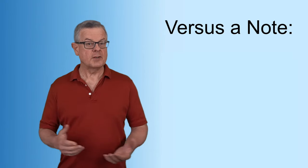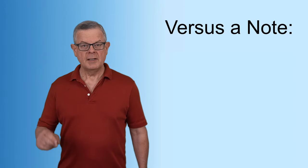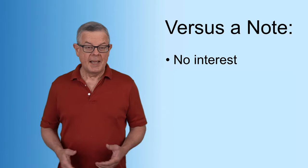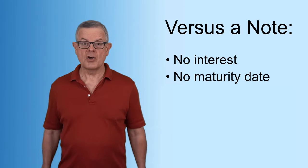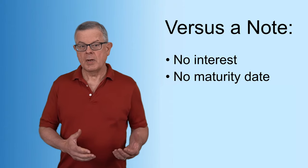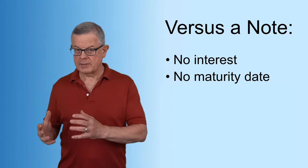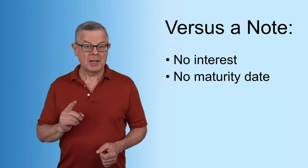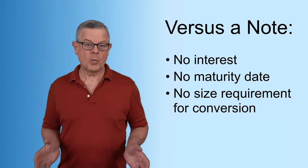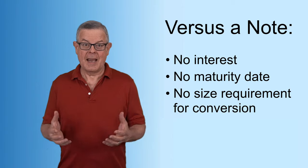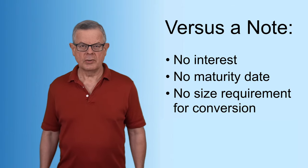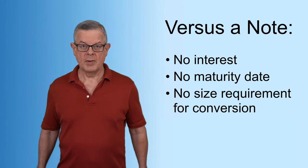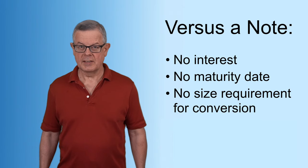How exactly does a SAFE compare to a convertible note? There are some important differences. First of all, a SAFE has no interest rate and it has no maturity date; a note, of course, always has both of those. Also, the SAFE, like the note, does convert into ownership in the future when there's an equity investment round. But unlike the convertible note, there is no size requirement for the SAFE — the SAFE converts at any equity investment. Typically, a convertible note will specify some minimum size for a future equity round that will cause the note to convert into ownership.